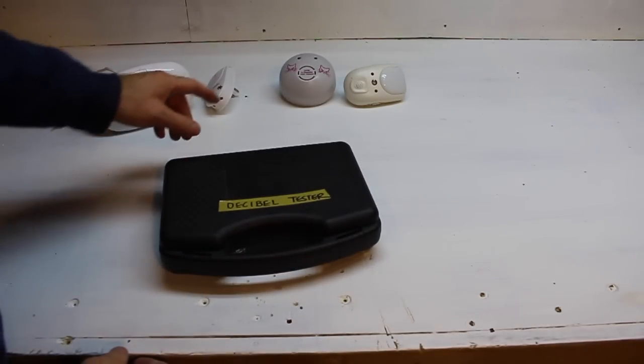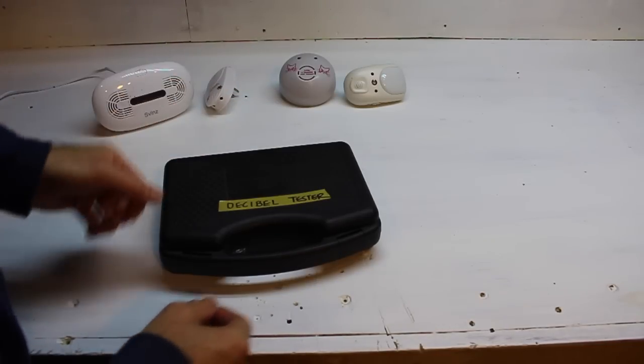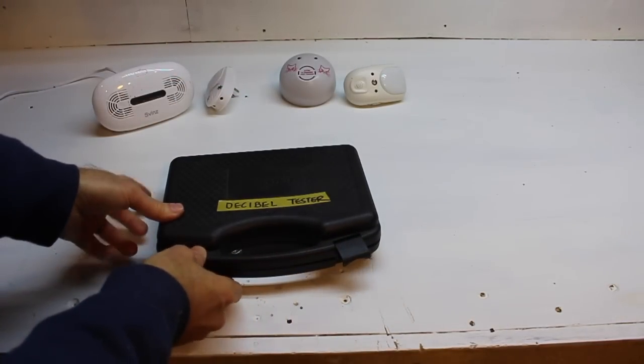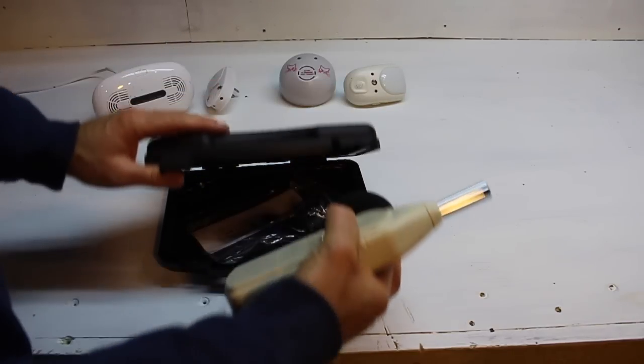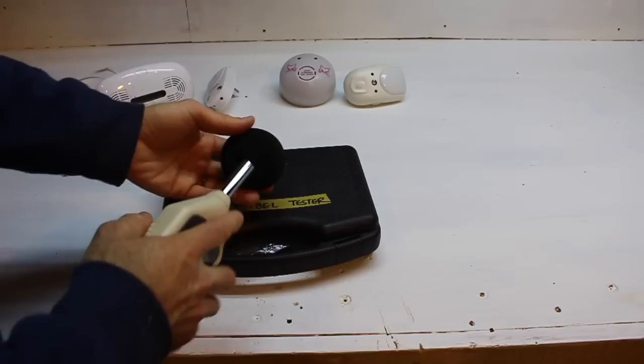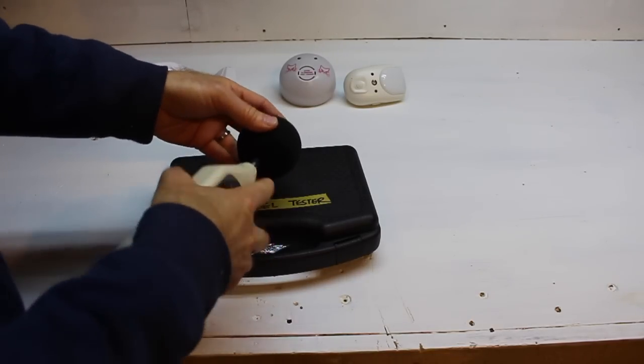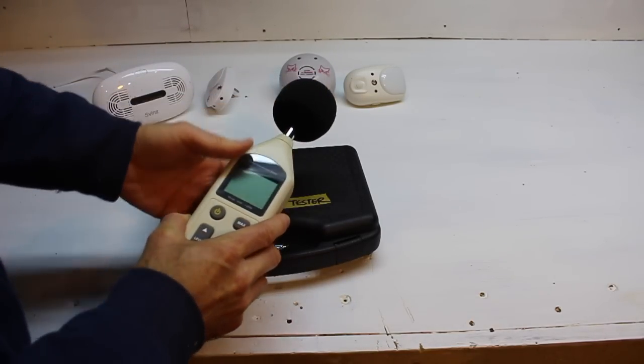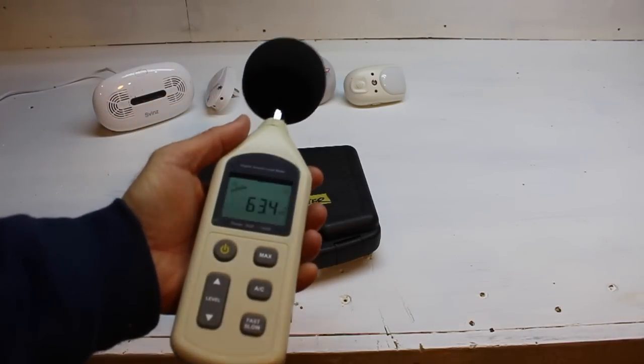So the last thing I'm going to do with these ultrasonic pest repellers is test them with my decibel tester. Even though the sound is what's called ultrasonic or outside of the human hearing range, you should still be able to register the emission of decibels using the decibel testers.